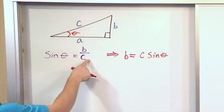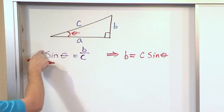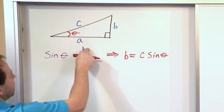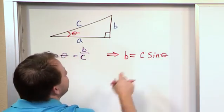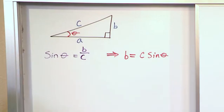All I did was rearrange this equation, basically multiply by c, and it comes in front of here. So b, which would be left behind, is equal to c times the sine of this angle. All right?